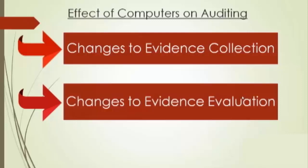The objective of auditing doesn't undergo a very significant change. An auditor has the responsibility of providing a competent and independent opinion as to whether the financial statements report a true and fair view of the state of affairs of the entity or not. We used to provide our opinion earlier, and we are doing the same now. What has changed is that earlier auditing was manual; now auditors also need knowledge and awareness with respect to IT. Computer systems have affected how auditors need to collect and evaluate evidence.